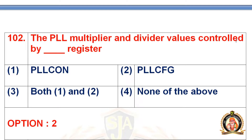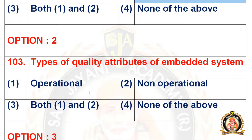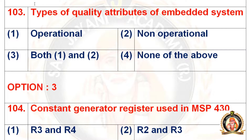Question 102: The PLL multiplier and divider values are controlled by dash. The options are PLLCO1, PLLCFG, both 1 and 2, and none of the above. The right option for question 102 is PLLCFG.